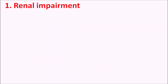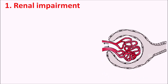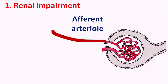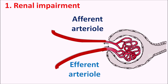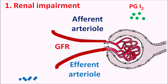The first side effect is renal impairment. Since ACE inhibitors act on the renin-angiotensin system, they can affect glomerular filtration. At the Bowman's capsule, the incoming arterioles are called afferent arterioles and the outgoing arterioles are called efferent arterioles. The rate of glomerular filtration is affected by two mediators: prostaglandin I2 (prostacyclin) and angiotensin II.